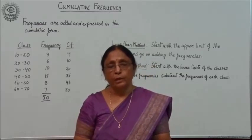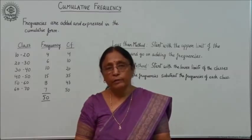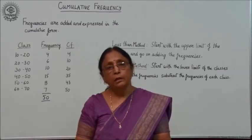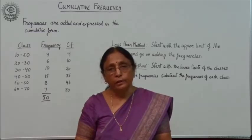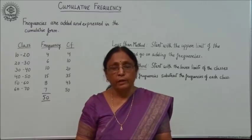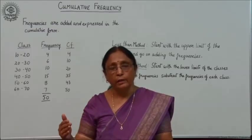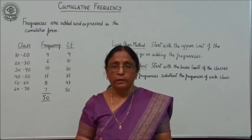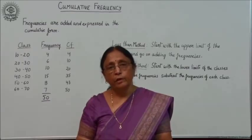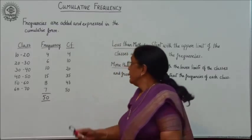Now in the cumulative frequency distribution, this is another term. What do you mean by cumulative frequency? As the word denotes, it is an added form of frequency. The frequencies are added together progressively — meaning each and every frequency we keep on adding and we show the cumulative added value of the frequency. This is known as cumulative frequency distribution.